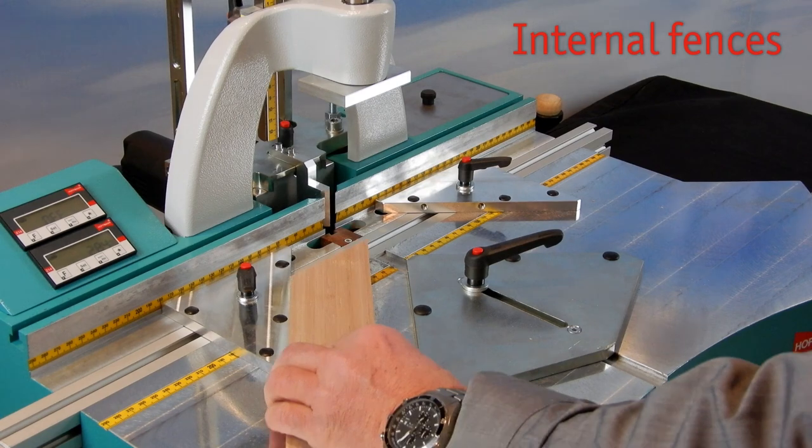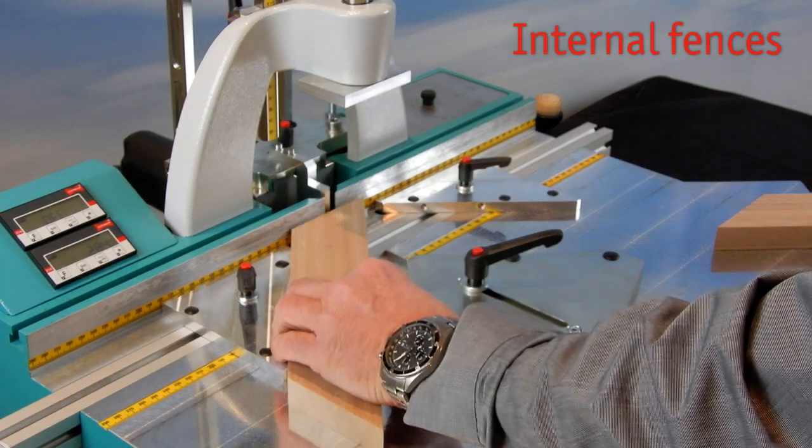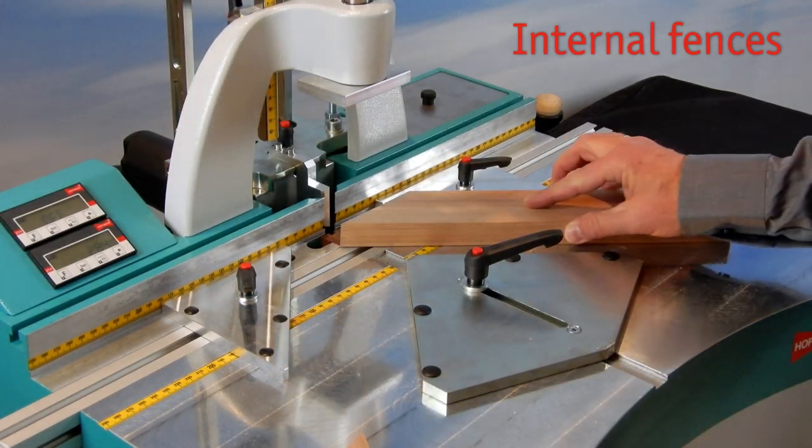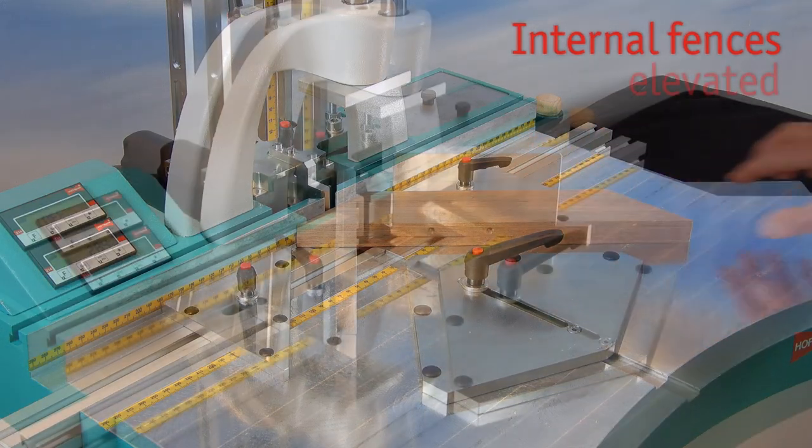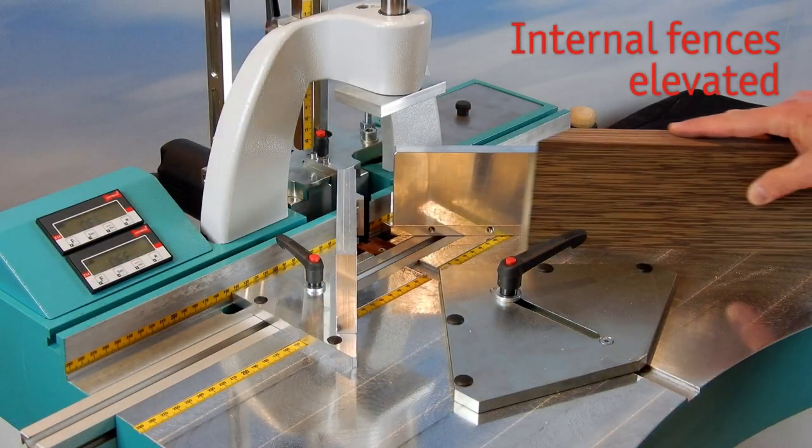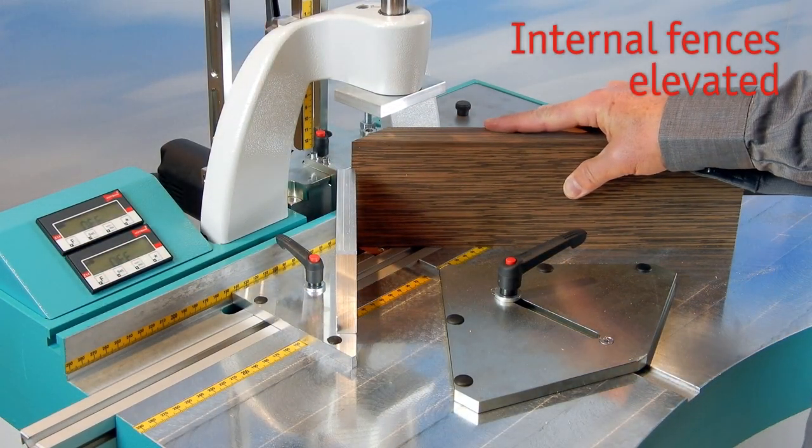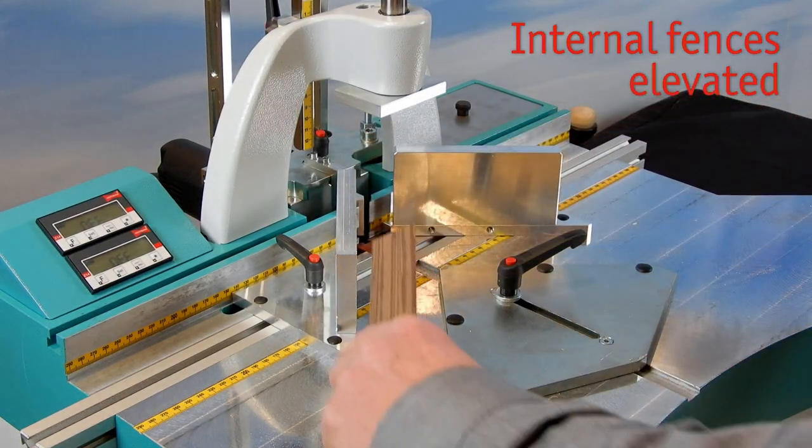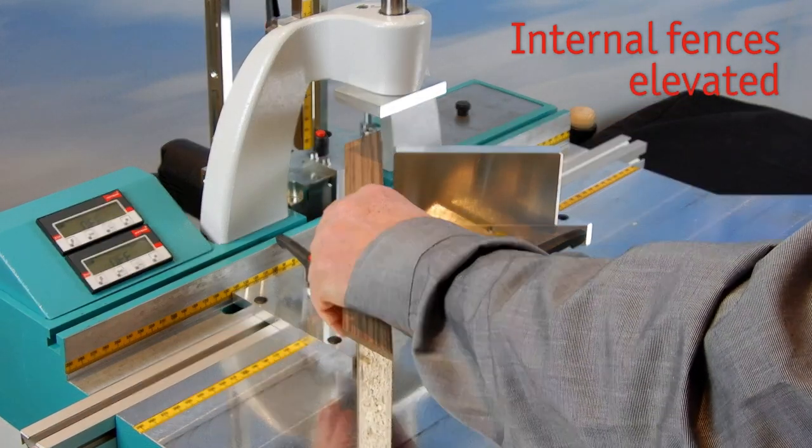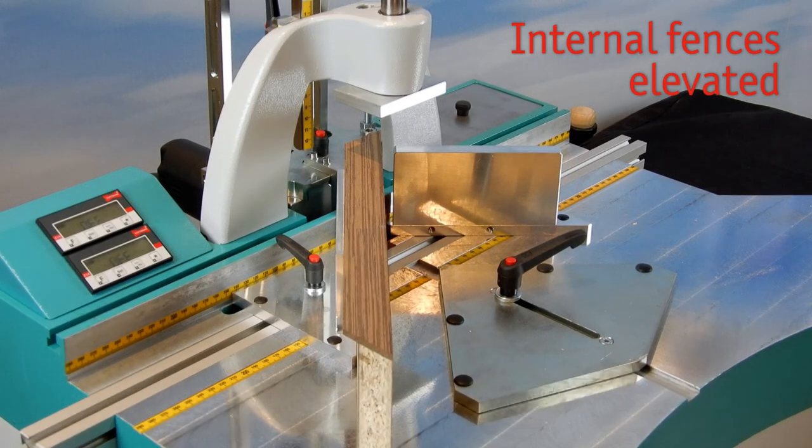Internal fences are needed if the inside edge of the profile represents the reference edge. Any width variations will be visible as offset on the outside corner and can be sanded flush, the perfect solution for narrow and high profiles.